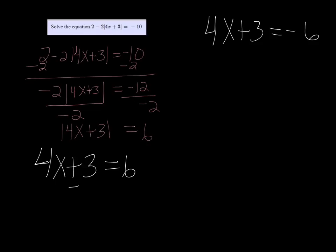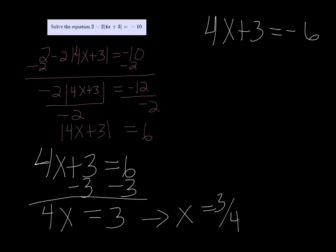So on the first equation, I'm going to subtract 3 on both sides. I get 4x equals 3. So that leads to x equaling 3 fourths after we divide by 4.